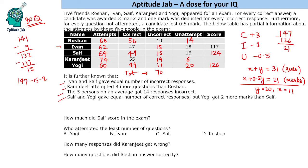The first question asks how much did Saif score in the exam — Saif scored 124. Who attempted the least number of questions? The least number of attempts is by Yogi. How many responses did Karanjeet get wrong? Karanjeet gave 19 incorrect responses. And how many questions did Roshan answer correctly? Roshan answered 56 questions correctly. We do not need to find their scores as it is not asked.